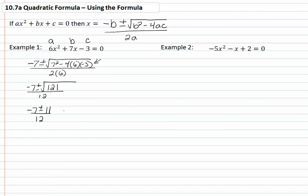Now simplifying that, we get (-7 + 11) / 12, which gives us 4/12, which equals 1/3.